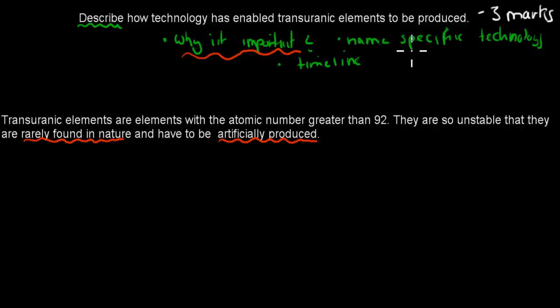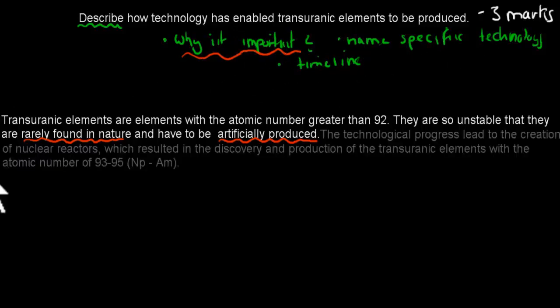So that's the first part covered. And now we have to name specific technology. So the technological progress led to the creation of nuclear reactors, which resulted in discovery and the production of the transuranic elements with the atomic number of 93 to 95. That's neptunium to americium. And when it comes to this kind of question, what we've done here, we've given specific technologies, so we've mentioned the nuclear reactor, and how progression in technology allowed us to make these nuclear reactors. And the nuclear reactors allowed us to make certain atoms with the atomic number of 93 to 95. So now we've given a technology that's good, and we've also given examples of what they create, so 93 to 95.